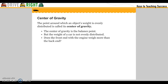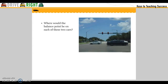The point around which an object's weight is evenly distributed is called the center of gravity. The center of gravity is the balance point, but the weight of the car is not evenly distributed. Does the front end with the engine weigh more than the back end? Where would the balance point be on each of these two cars?